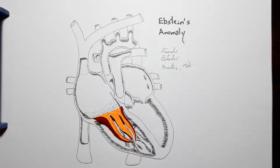During embryology, the valves originate from ventricular tissue, and in the process of separating from the ventricular tissue, there is a process of splitting of tissue named delamination — detaching the tissue's inner lamina or layer.